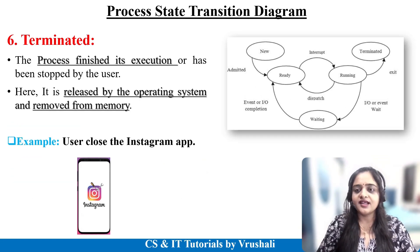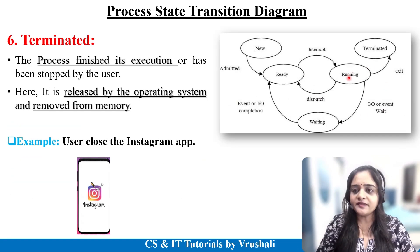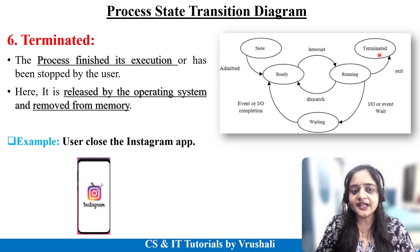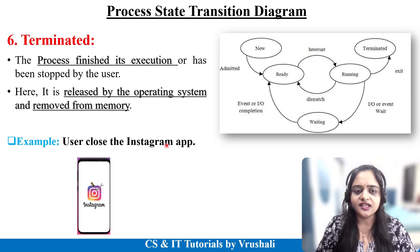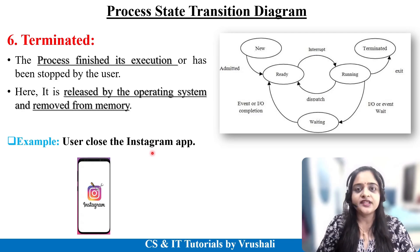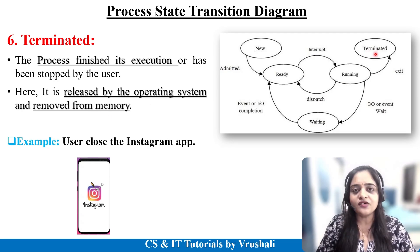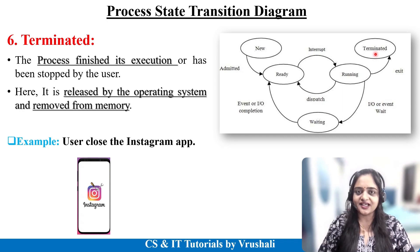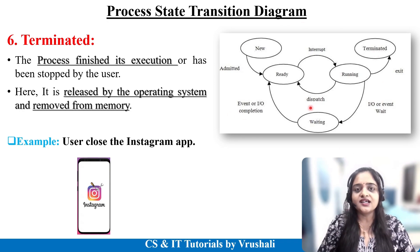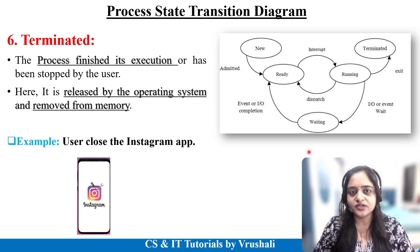From the running state, it also goes to the terminated state. Terminated means your process is finished with execution — you closed your Instagram application. It is released by the operating system and also removed from memory. This is the last state of the process state transition diagram.